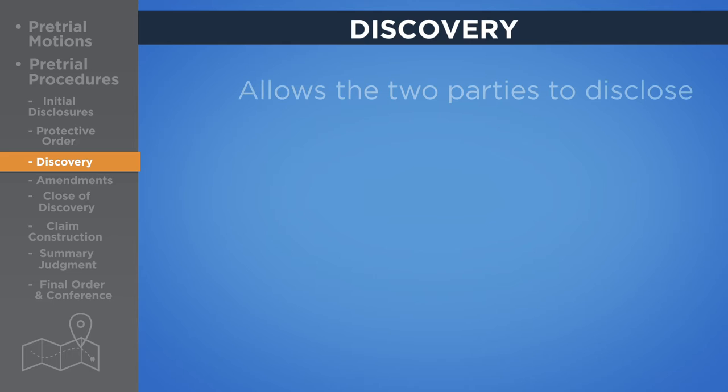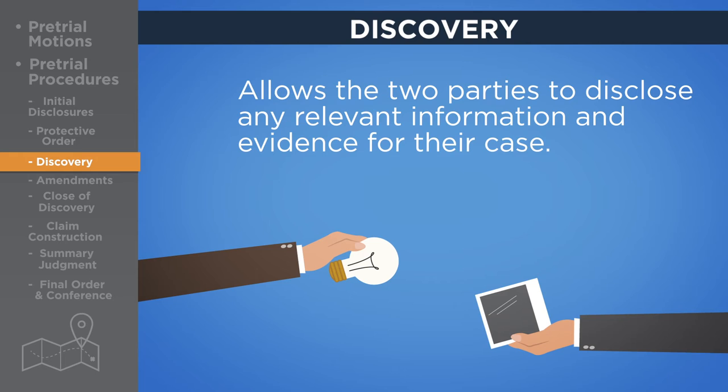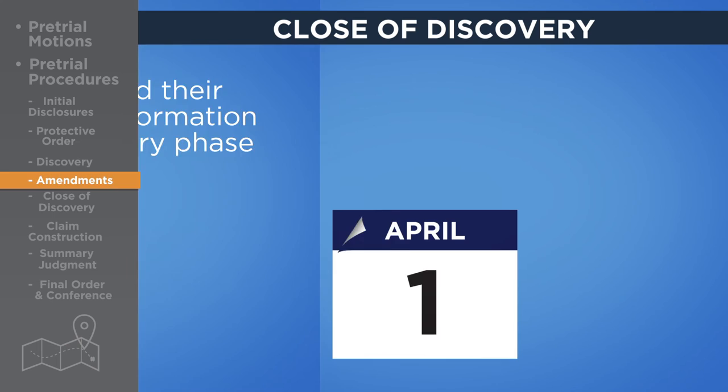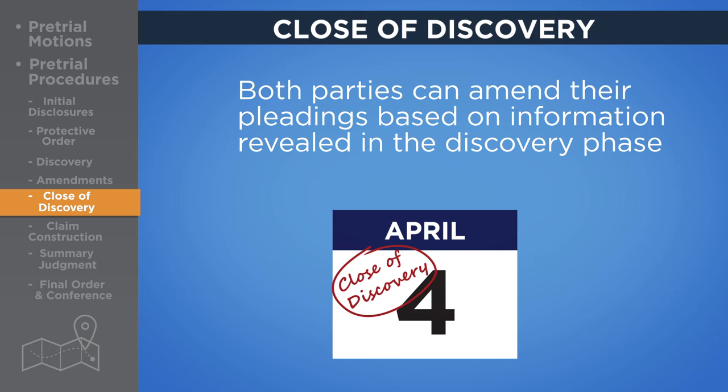The discovery phase allows the two parties to disclose any relevant information and evidence they have gathered for their case. This evidence can include documents, digital information, photographs, measurements, tangible objects, and inspections of related properties. After the discovery phase, both parties can amend their pleadings based on the information revealed. Close of discovery is the date by which all requests for records, documents, and other evidence must be complete.